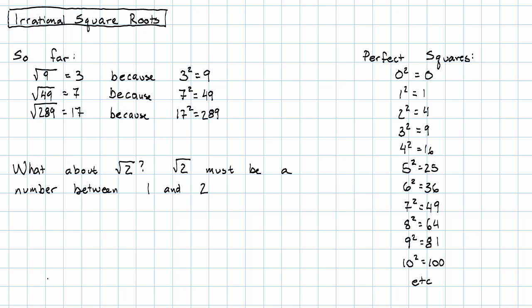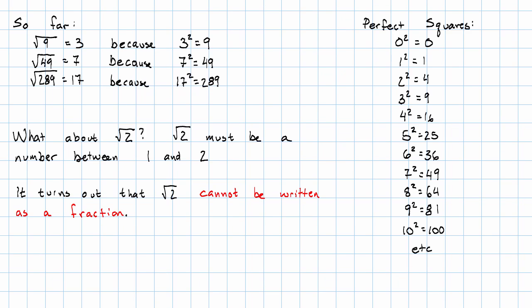We know a lot of numbers between 1 and 2, and so far, they're all fractions. Could the square root of 2 be a fraction? It turns out that the square root of 2 could not be a fraction. And I'm not just going to tell you that. It's not just that I can't think of a fraction that we can write it as. It's that we can show that no fraction is the square root of 2.